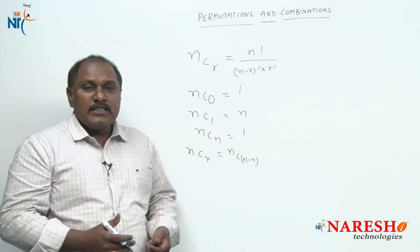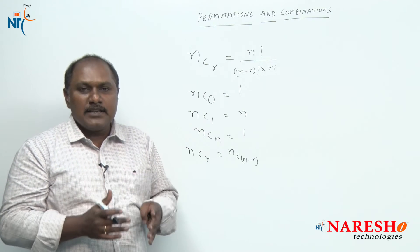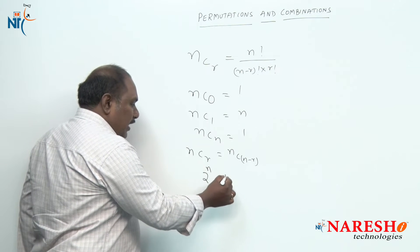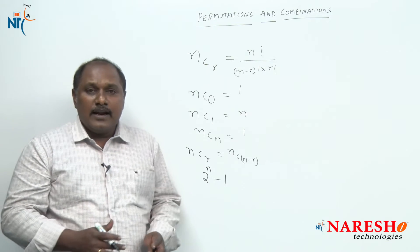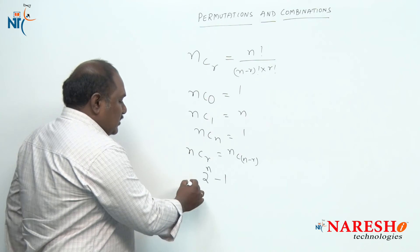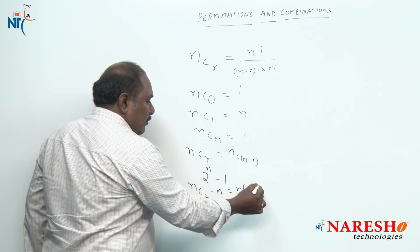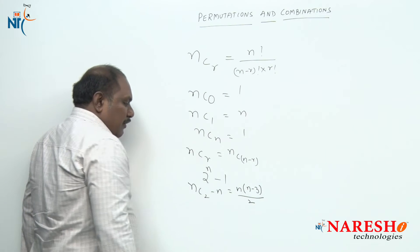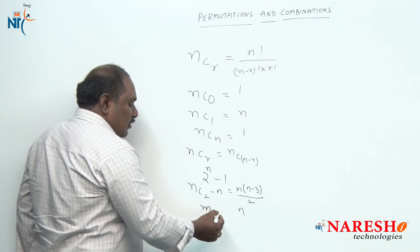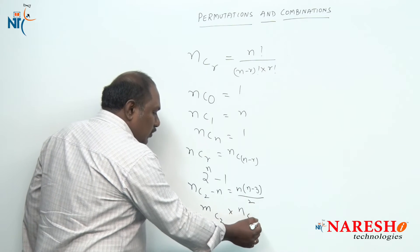In how many ways can we select at least 1 out of n different things? That is NC1 plus NC2 and so on till NCn, which is given by 2 to the power of n minus 1. The number of diagonals in an n-sided polygon is given by NC2 minus n, which equals n(n minus 3) divided by 2. If a set of n parallel lines intersects with another set of n parallel lines, the total number of parallelograms formed is NC2 into NC2.